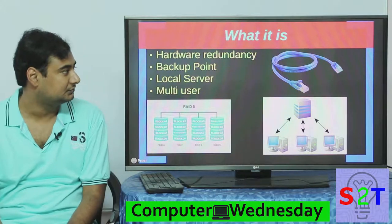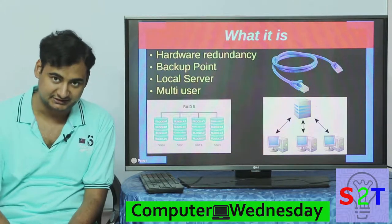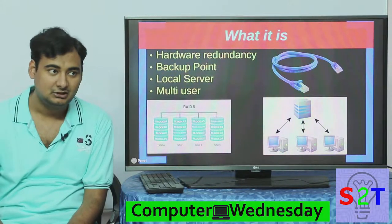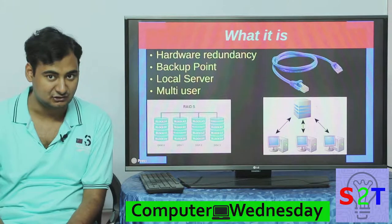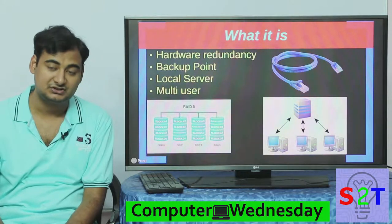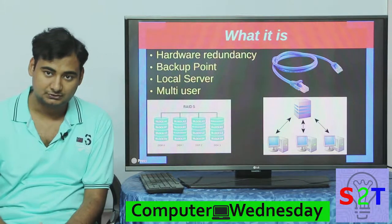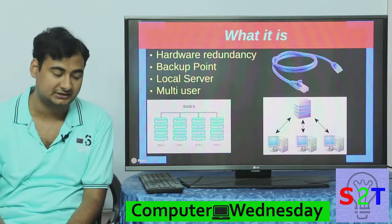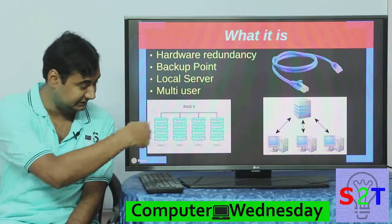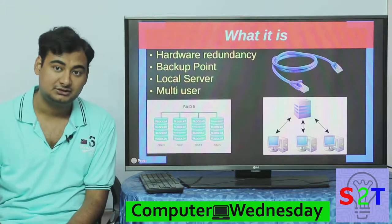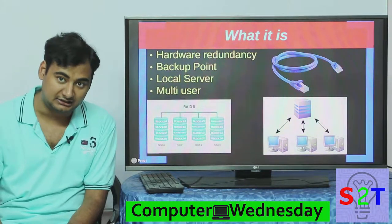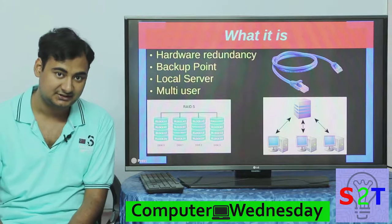To understand NAS simply, you have to understand what it allows. It allows hardware redundancy. Think of it this way — if you have a hard drive in your computer and anything goes wrong, all the data is gone. NAS uses a RAID array where, for example, with four hard drives, any one can be lost and you will still retain full data.